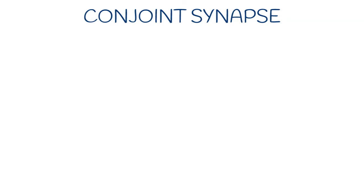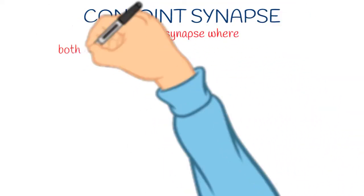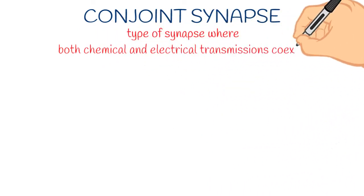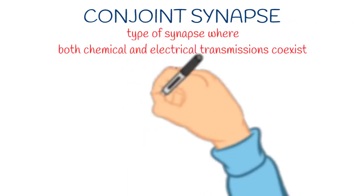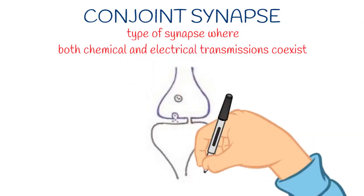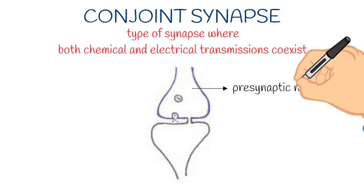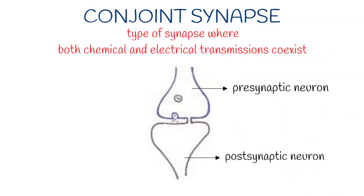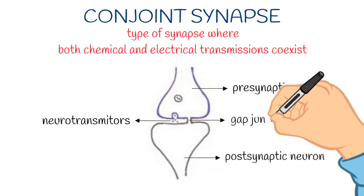Third type under physiological classification is conjoint synapse. Conjoint means two synapses together. This diagram will clarify it. This is the pre-synaptic neuron and this is the post-synaptic neuron. Here you can see information is transmitting through both neurotransmitters and gap junctions.